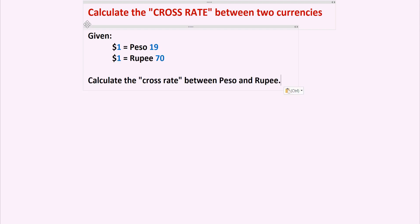In this video, I would like to explain the calculation of the cross rate between two different countries' currencies. Let's say we have the following example. What we are given is $1 equals 19 Mexican pesos, and we also have $1 equals 70 Indian rupees.